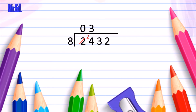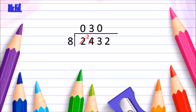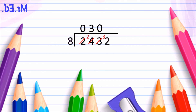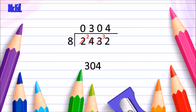We cross out our number and move along. How many times can 8 go into 3? Well, 8 doesn't go into 3 because 3 is less than 8. So we put a 0 in our quotient area, cross out our 3, and carry it over to make 32. Now how many times does 8 go into 32? Using our 8 times table: 8, 16, 24, 32 — 8 goes into 32 four times. So the answer to 2,432 divided by 8 is 304.